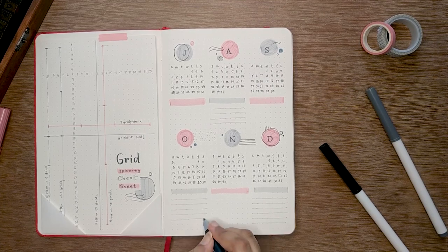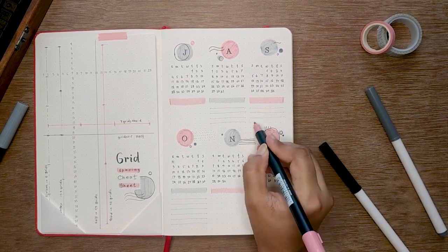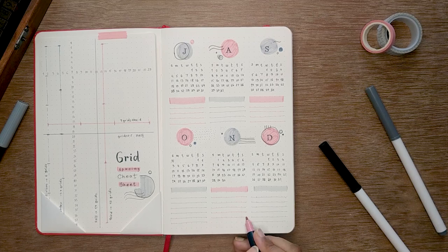On the next spread, I'm making a feature log. From now, I'm gonna use my alphabet stamps for a while.